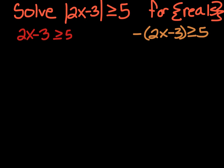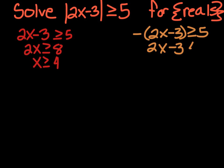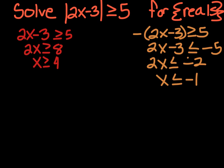2x minus 3 is greater than or equal to 5, and the negative of 2x minus 3 is greater than or equal to 5. Step three: solve each inequality. On the left side, if we add 3 to both sides, we get 2x is greater than or equal to 8. Divide both sides by 2: x is greater than or equal to 4. On the right side, if I divide both sides by negative 1 — remember when you divide by a negative you have to switch that sign — I have 2x minus 3. Then add 3 to both sides: negative 5 plus 3 is negative 2. Then divide both sides by 2: x is less than or equal to negative 1.